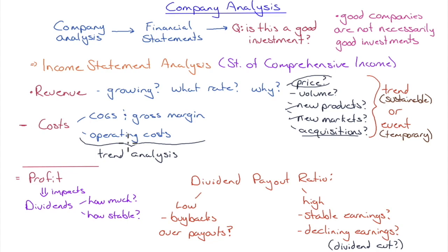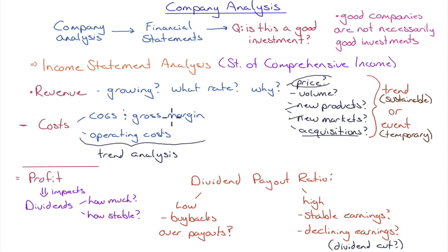For costs, there are two types: cost of goods sold and operating costs. The gross margin (from COGS) tells us how efficiently the company purchases raw materials or inventory, and what competitive pressure it faces. Operating costs tell us how efficiently the business is run. We look at gross margin and operating costs over time as a percentage of revenue — for SG&A specifically, if revenues are increasing, the percentage of SG&A should decrease over time (economies of scale).